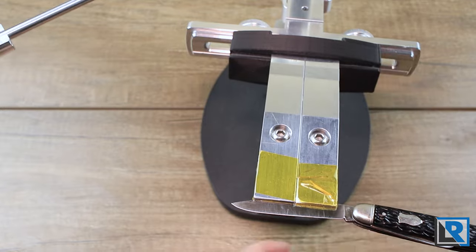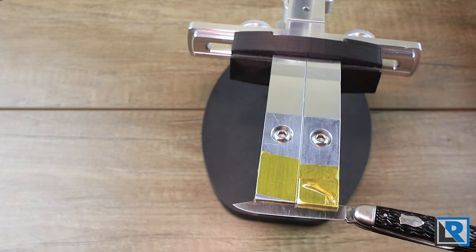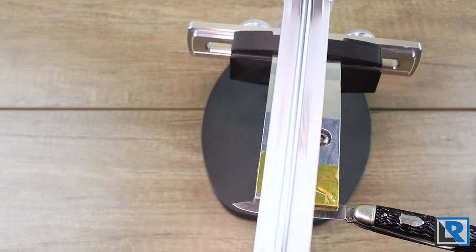Got everything tightened down. Use your angle cube to set whatever angle you want on your knife blade, obviously by adjusting in the back. Throw a stone in. Obviously I'd get it wet. And happy sharpening.